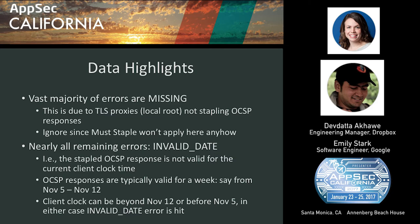This won't actually be a problem in the real world if we turn on Must Staple, because Chrome and any browser will just ignore OCSP Must Staple if it's a local TLS proxy certificate. Nearly all the remaining errors were invalid dates — the stapled OCSP response is not valid for the current client's time. OCSP responses are typically valid for a week; if your current time is after the 'next update' date or before the 'this update' date, you'll get an invalid date error.